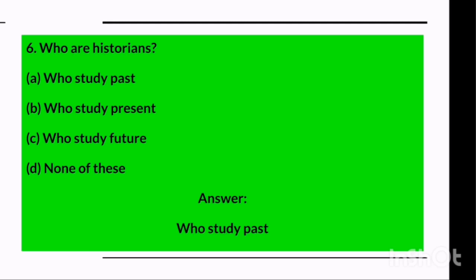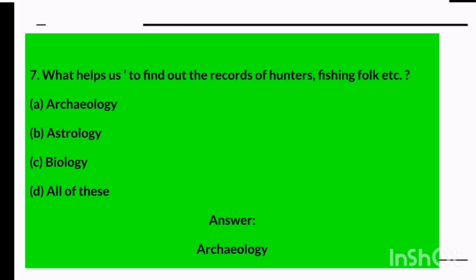Question six: Who are historians? Options are those who study the past, those who study the present, those who study the future, or none of these. The answer is already in the question — those who study the past are called historians.